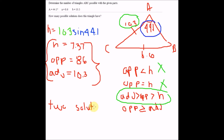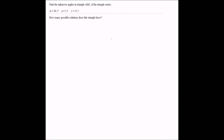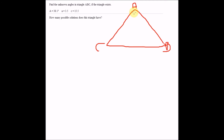Once we figure out which scenario applies, we don't need to look any further. There are two solutions because the adjacent side is greater than the opposite side of the given angle and the opposite side is greater than our found height. For our last example, we are given angle A, side A, and side C.